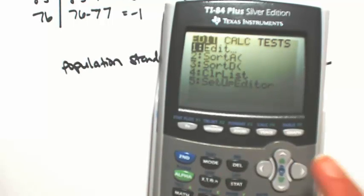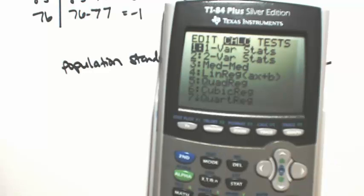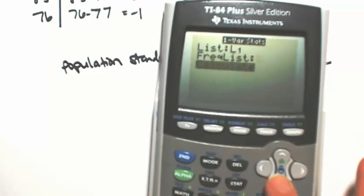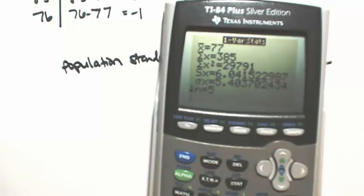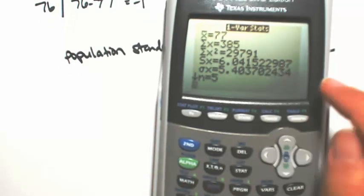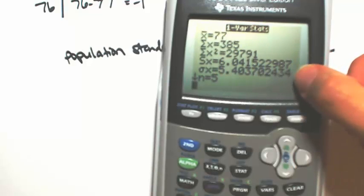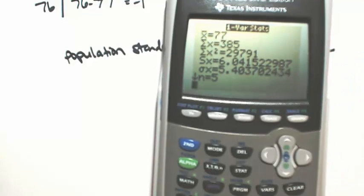And then this time you're going to go over to calculate. And there's only one list. So we'll do one variable. All the data is in list one. Just go to calculate. And there's our sample I mean. And then our population. So those are three types of calculators. Hopefully that's one that you have on how to figure out the standard deviation.